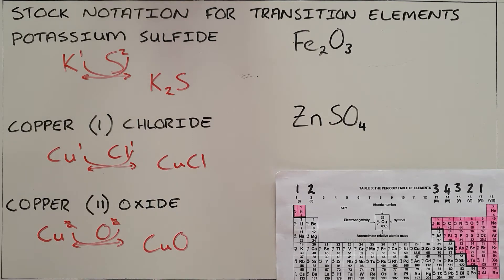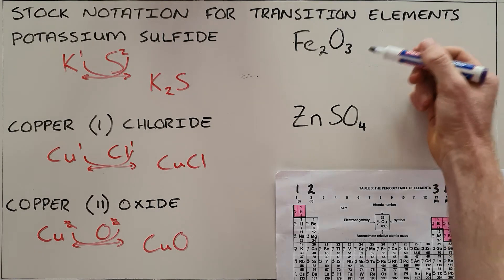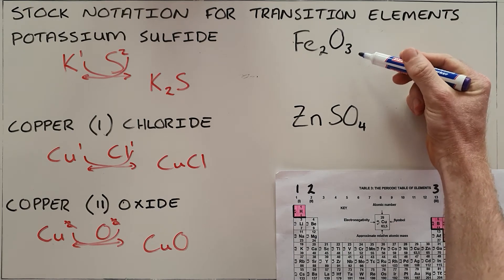This is slightly more complicated when you are given the formula and asked to write down the name for this compound, and we can show how that is done here in this example, iron oxide.